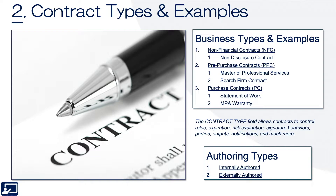Second topic: contract types and examples. All contracts within a procurement application — supplier contracts — tend to fall into one of three types. Non-financial, such as a non-disclosure, joint venture, teaming agreements. Pre-purchase contracts, which are buyer-supplier contracts around financial transactions, also referred to as master contracts — master professional services, master services, master hosting, master end-user license agreements or ULAs. And then actual purchase contracts for a particular instance.